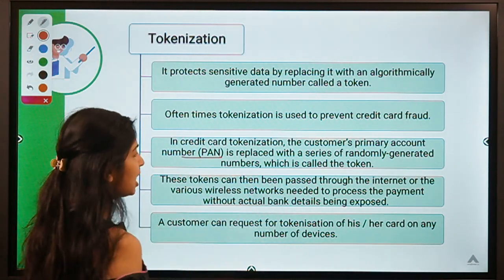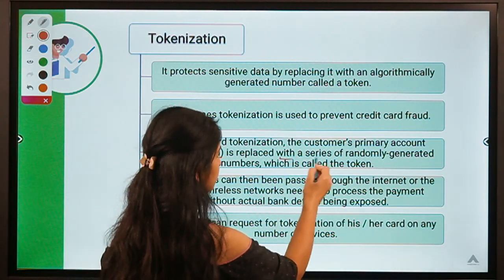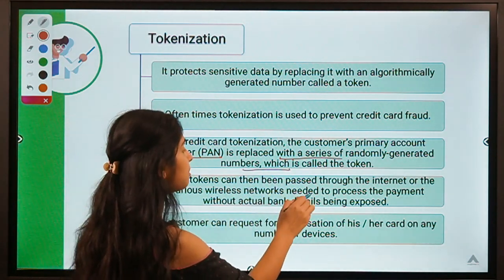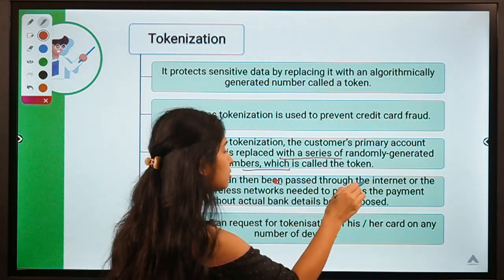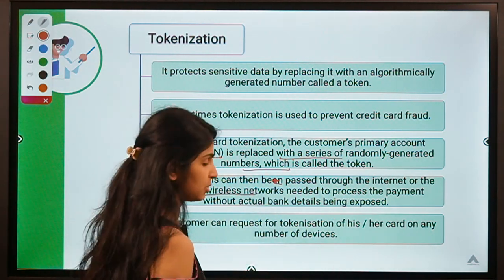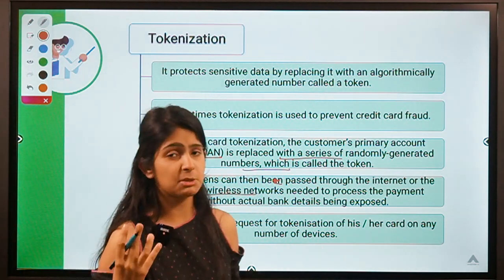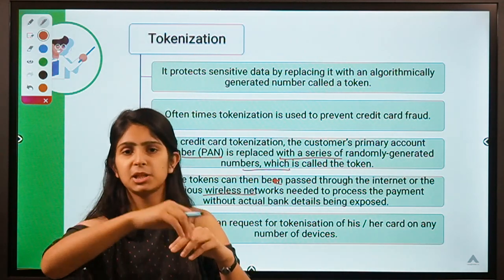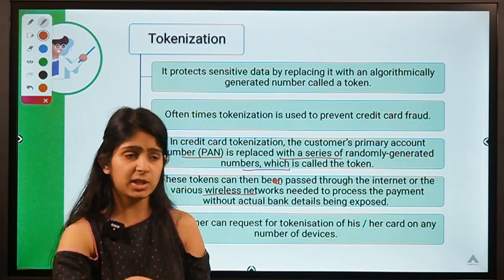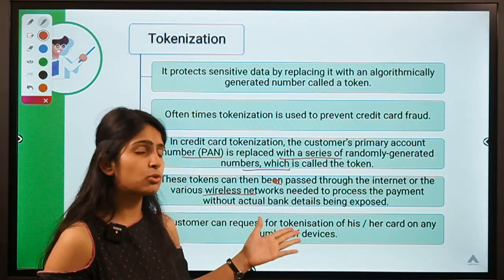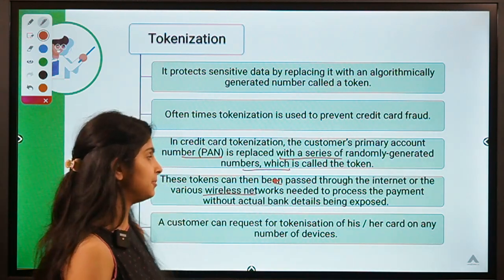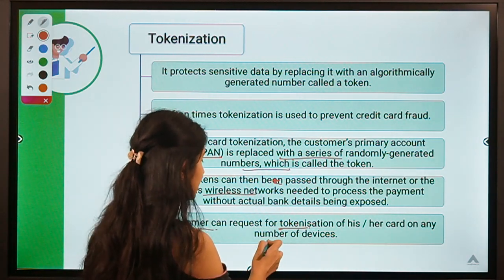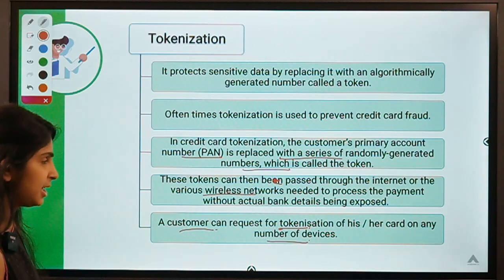These tokens can then be passed through the internet or various wireless networks. When making a payment on Myntra, the information in the app needs to be transmitted to different entities, and after tokenization it becomes safer to pass it on. A customer can request tokenization of their card on any number of devices once the card is tokenized.